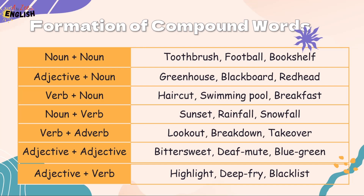Compound words are also formed by verb plus noun, such as haircut, swimming pool, and breakfast; noun plus verb, such as sunset, rainfall, and snowfall; verb plus adverb, such as lookout, breakdown, and takeover; adjective plus adjective, such as bittersweet and blue-green; and adjective plus verb, such as highlight, deep-fry, and blacklist.